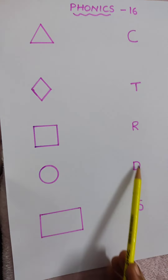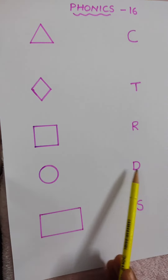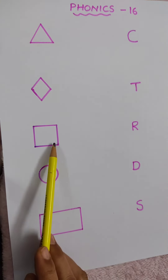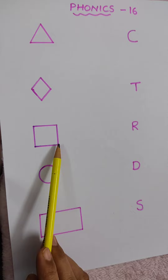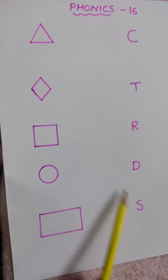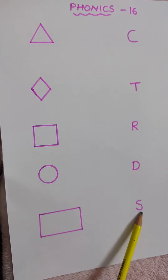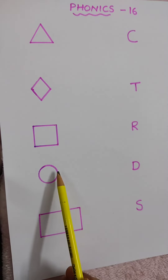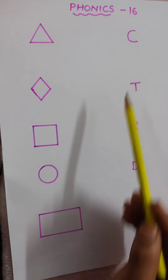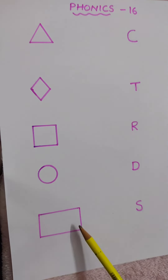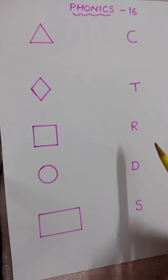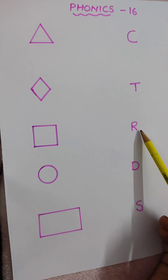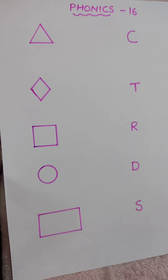You have to match each shape to its starting letter — like this. Square, circle goes with C, and rectangle goes with R. Thank you!